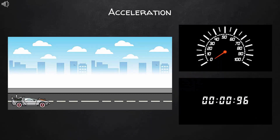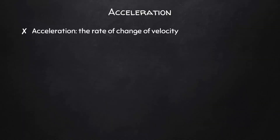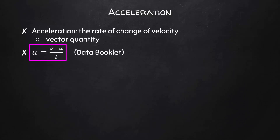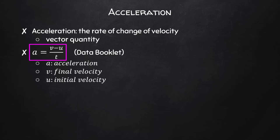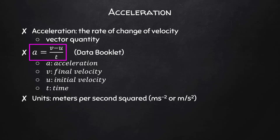Let's take a look at acceleration. Acceleration is the rate of change of velocity — it's a vector quantity. We can write A equals V minus U divided by T, and you can find this equation in your data booklet. A stands for acceleration, V is final velocity, U is initial velocity, and T is time. The units for acceleration are meters per second squared, written as meters times seconds to the negative two, or m/s².